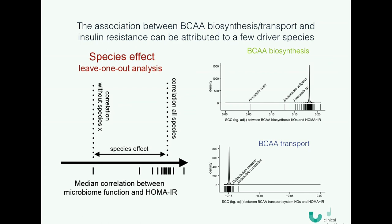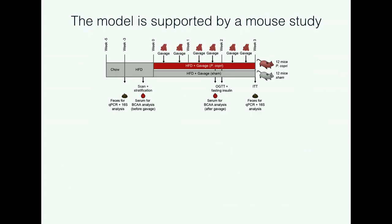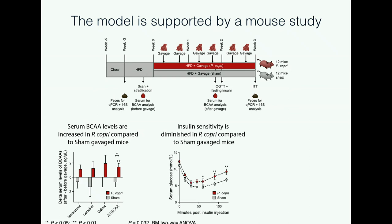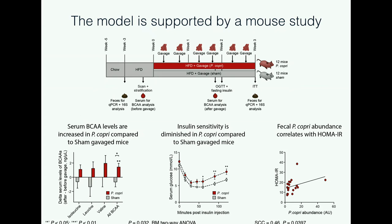To go beyond associations, we isolated Prevotella and gave it to 12 mice on a high-fat diet. After about three weeks, we could already see elevated levels of branched-chain amino acids in the serum of these mice, and their insulin sensitivity was significantly impaired. A number of those mice actually developed what you would classify as type 2 diabetes after four or five weeks. This suggests that these findings are not only associations — you can actually inoculate these bacteria into mice and see the phenotype occur.